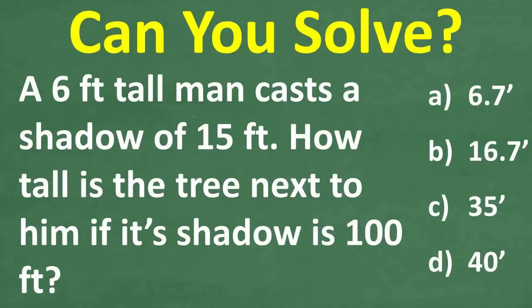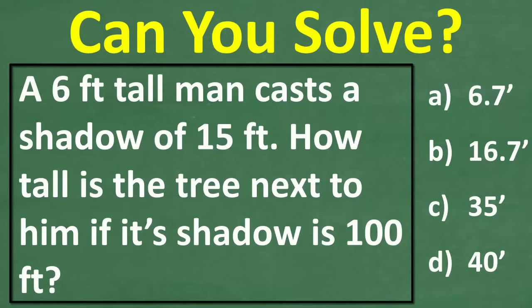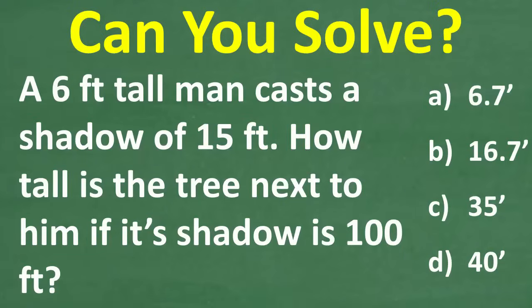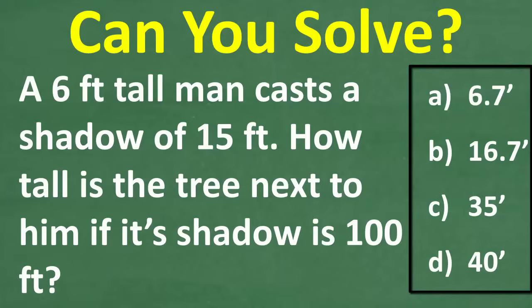It is a word problem and it is as follows: a six-foot-tall man casts a shadow of 15 feet. How tall is a tree next to the man if its shadow is 100 feet? This is a multiple choice question. Here are our choices: A) 6.7 feet, B) 16.7 feet, C) 35 feet, and D) 40 feet.